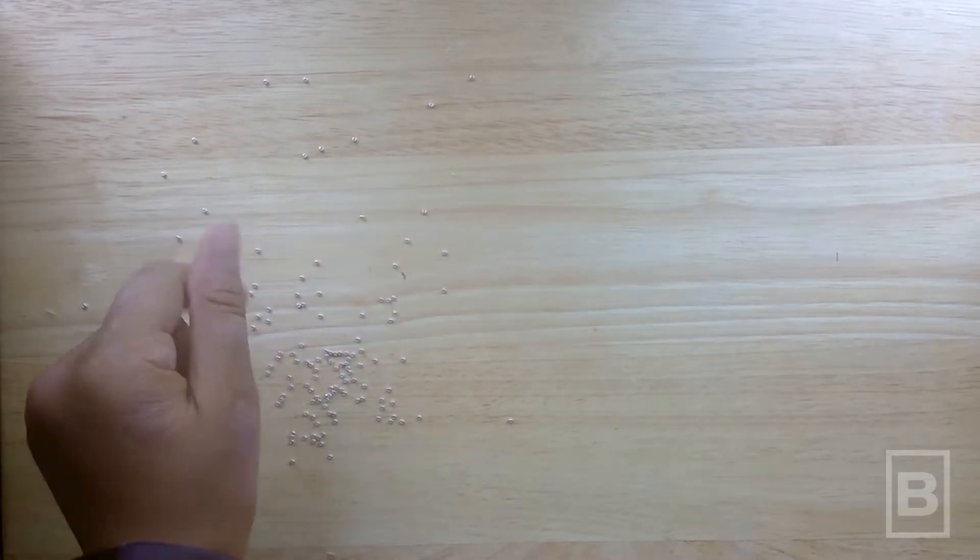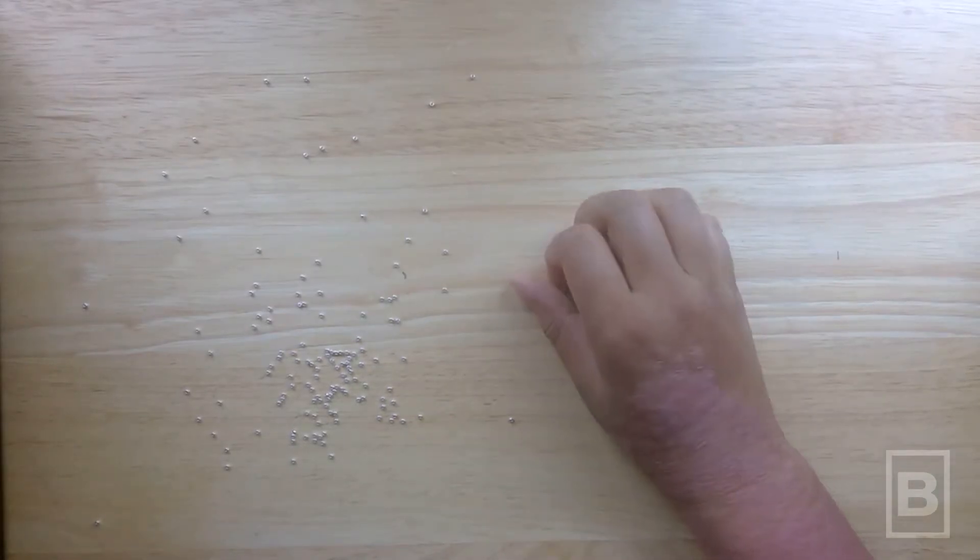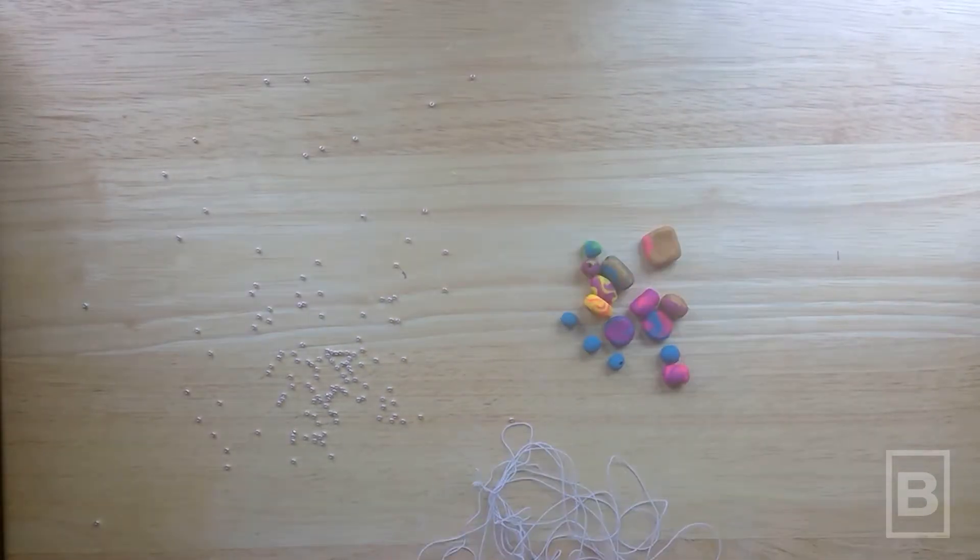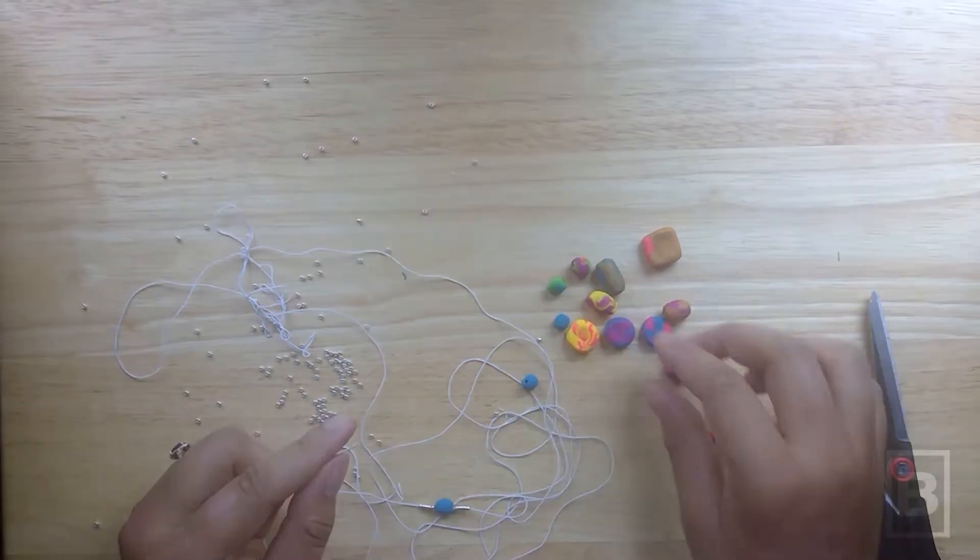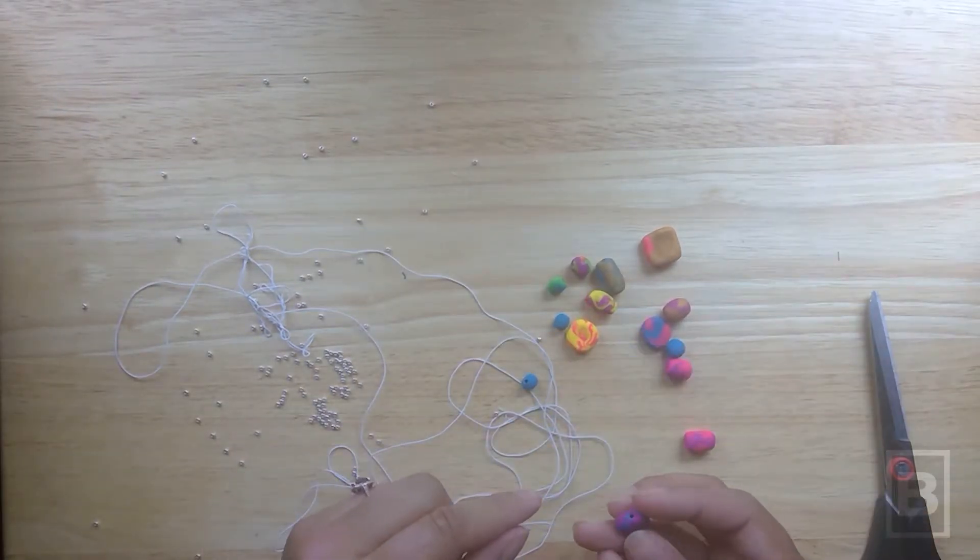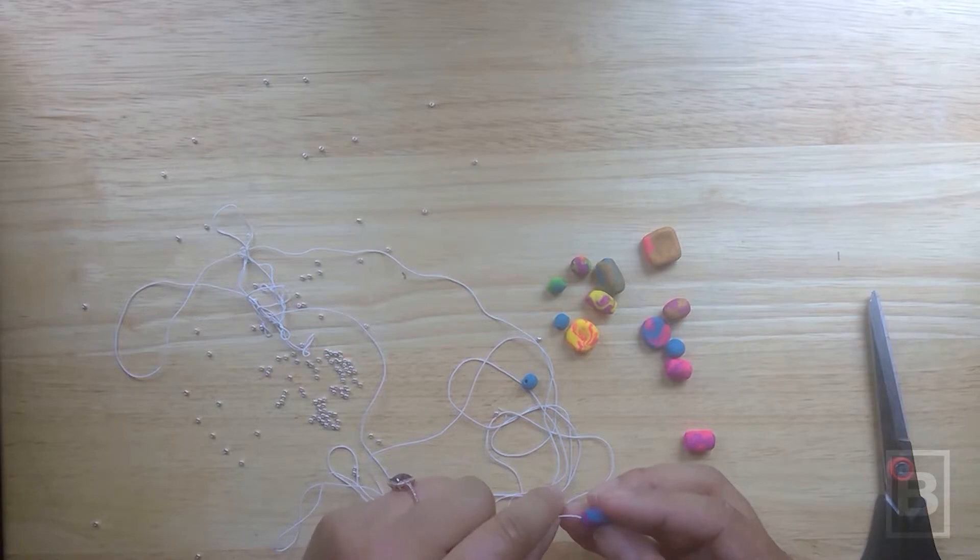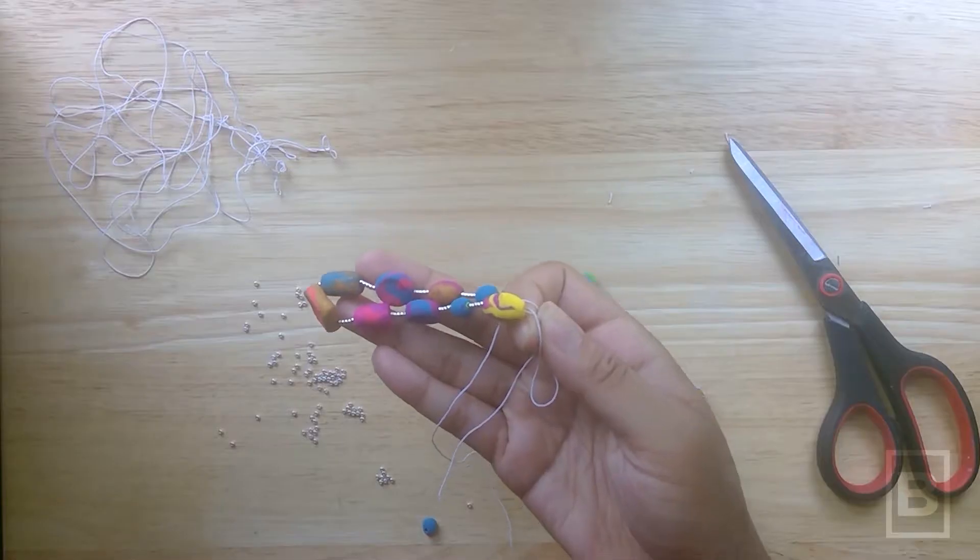For the bracelet, use small silver beads, handmade Sculpey beads, elastic string, and scissors. Cut the elastic string to your desired size but make sure to leave extra length for tying. Plan your pattern and add your beads or add them at random for a more organic look.